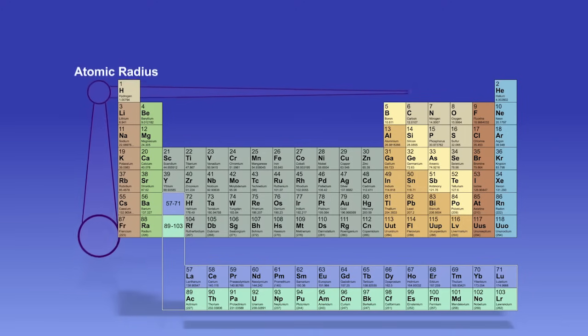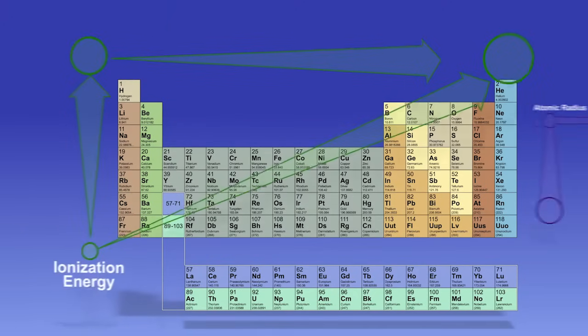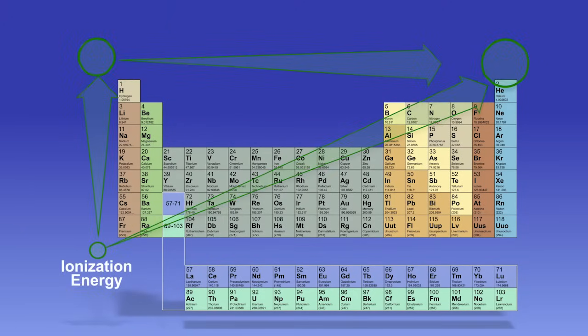The opposite is true for an atom's ionization energy, or how readily an electron can be removed from an atom. As you move down through the periods, the ionization energy will decrease. As you move from left to right across the groups, the ionization energy will increase.